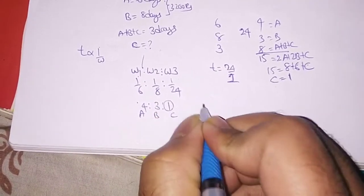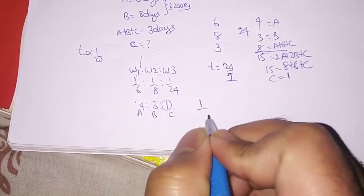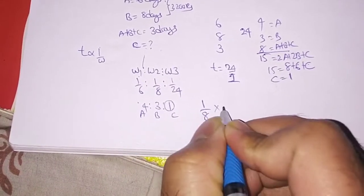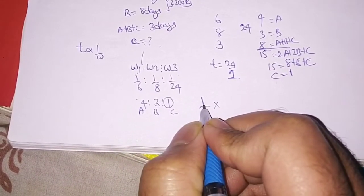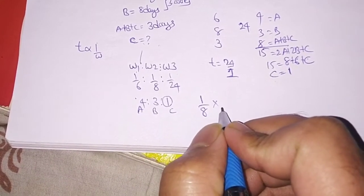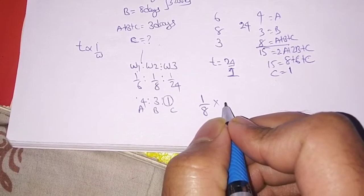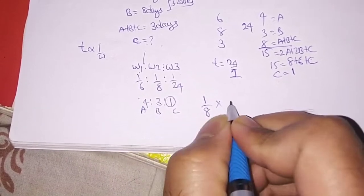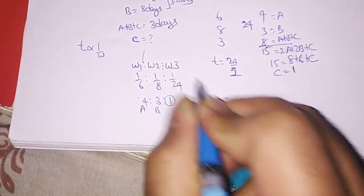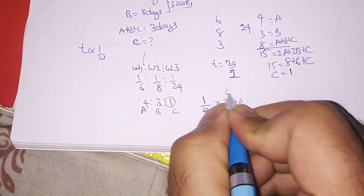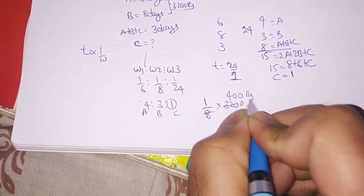So here, 1 by 4 plus 3, 7, that will become 8. I think I taught you this trick in ratios and concepts part 1. If you missed the part 1, please do watch the part 1 and multiply it with the total sum. 8 into 4, so the answer is 400.